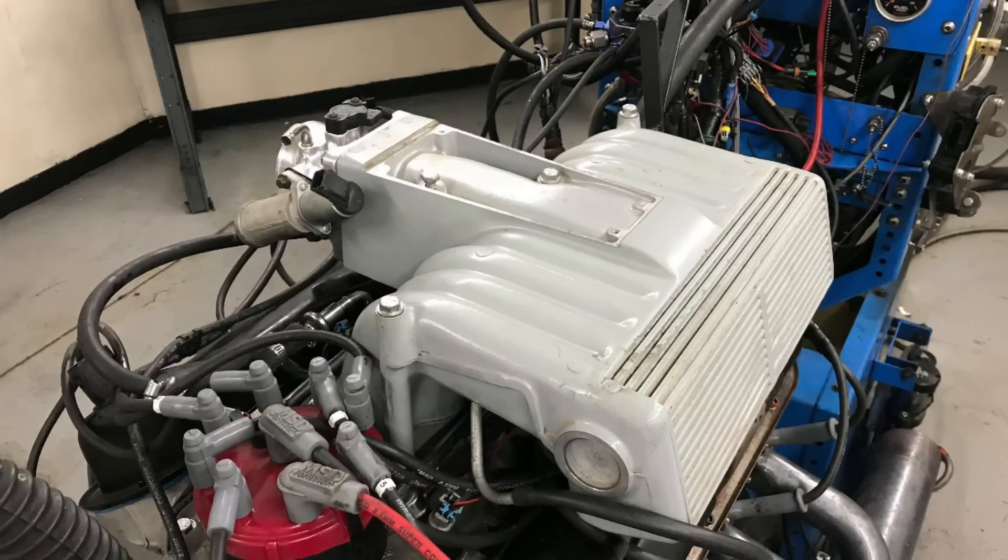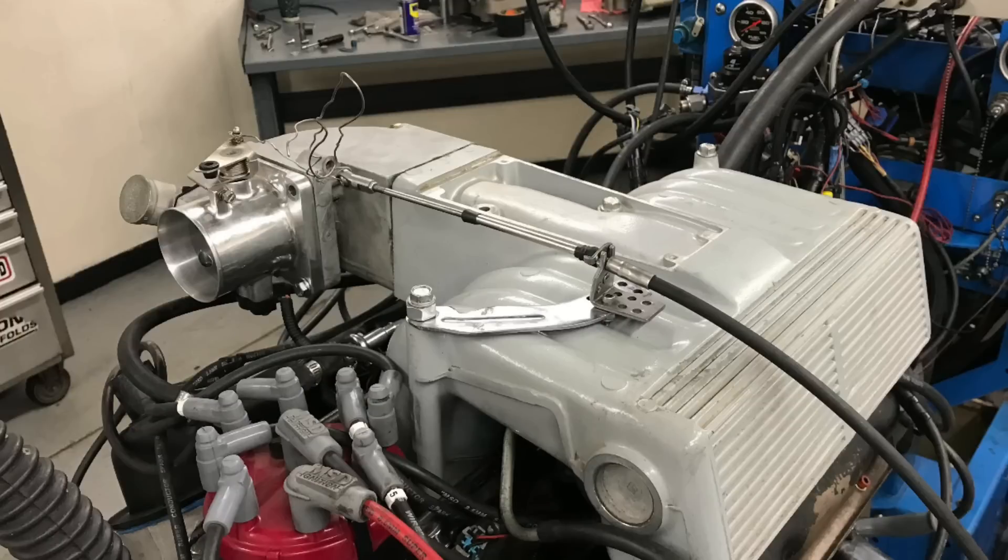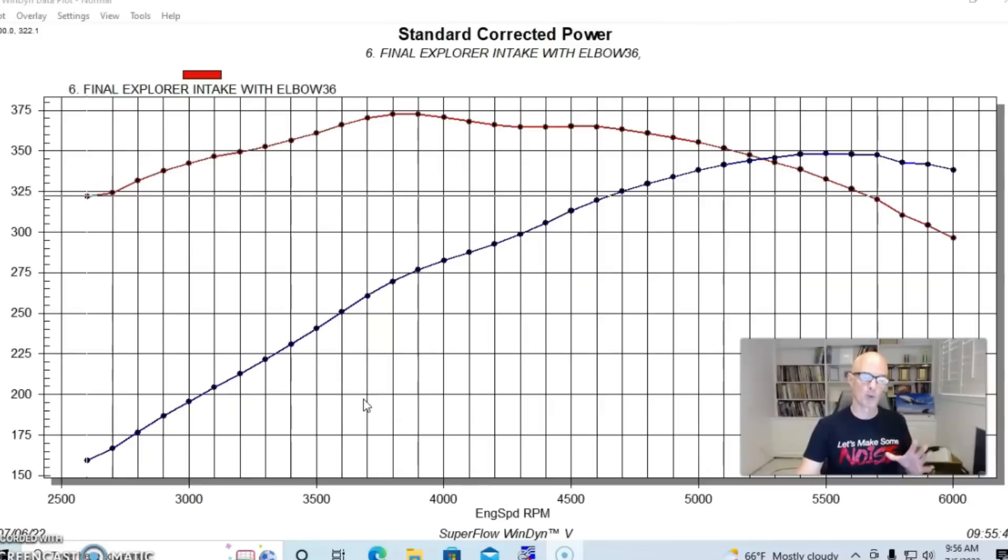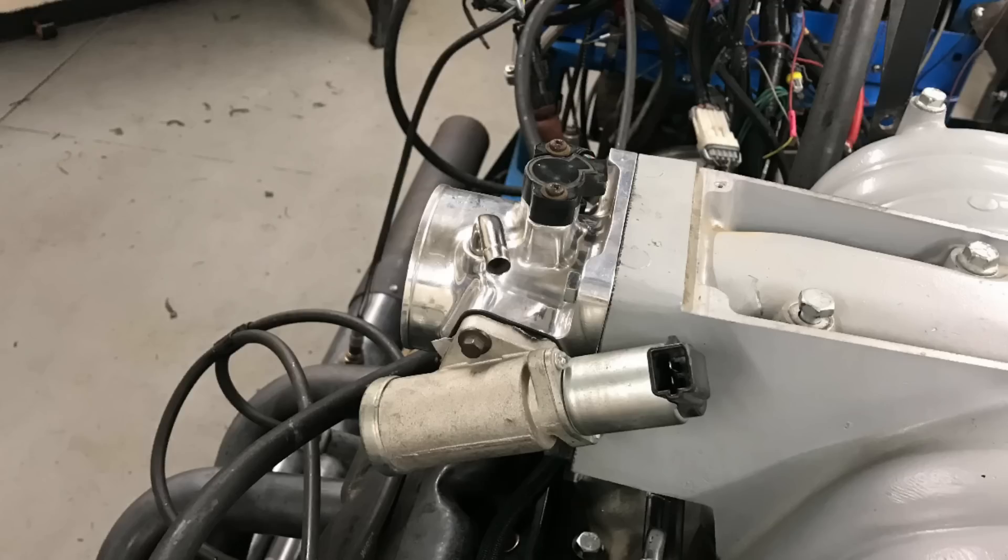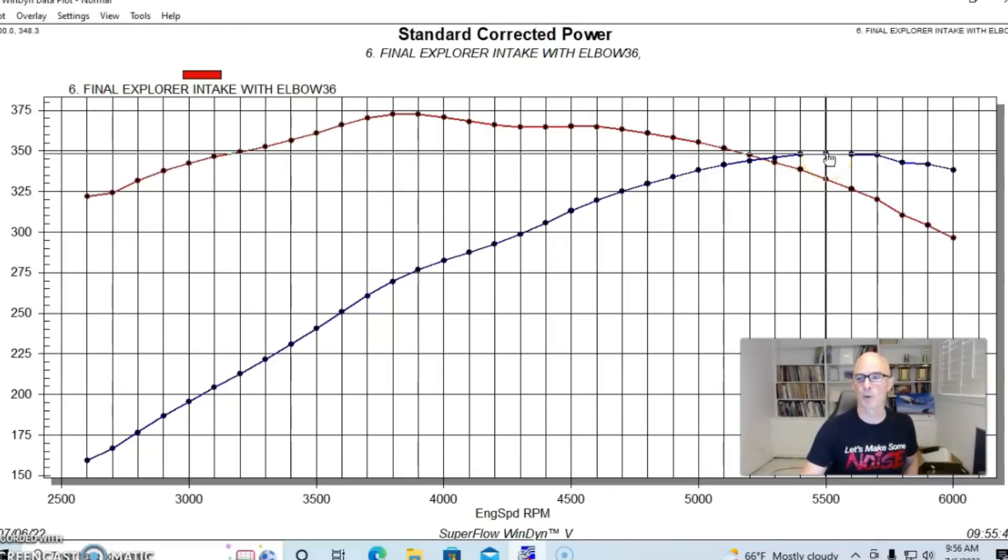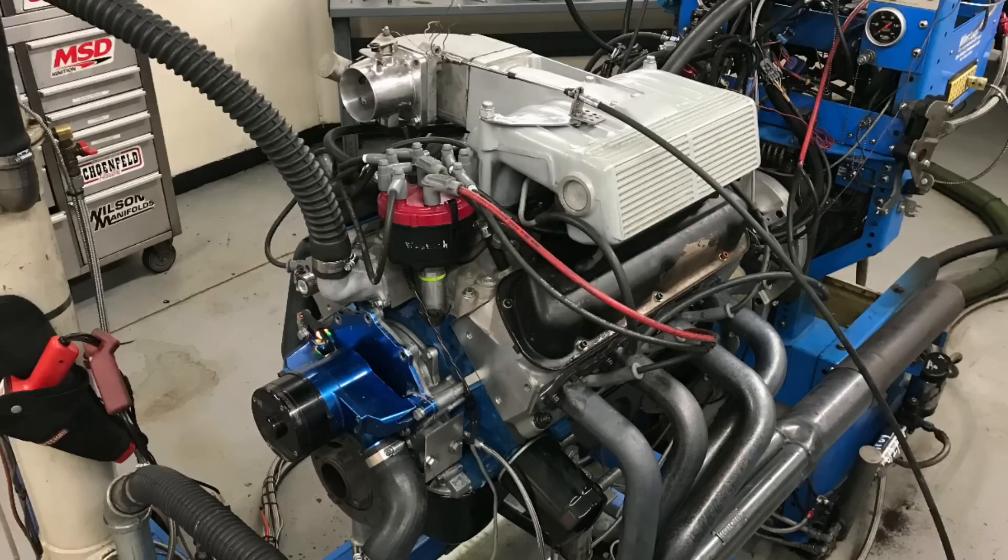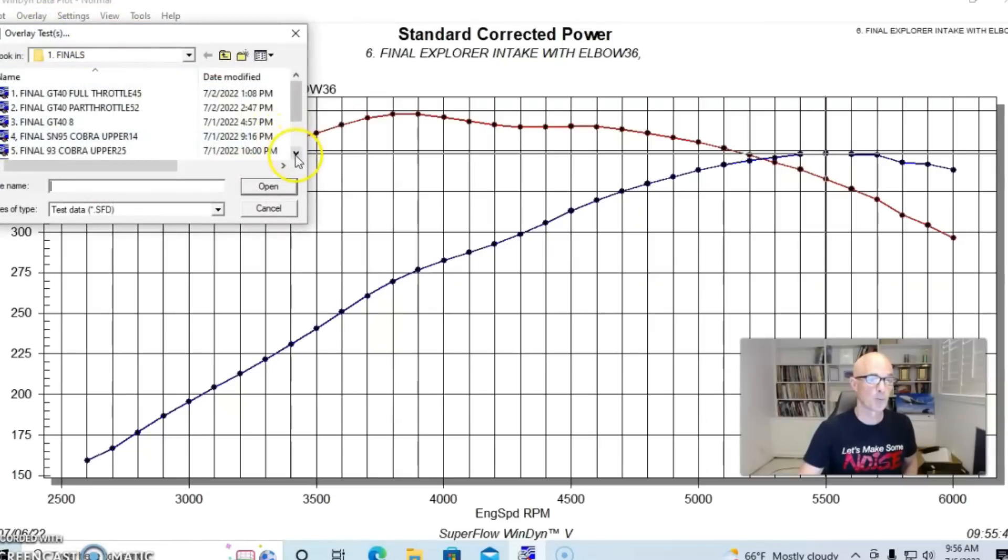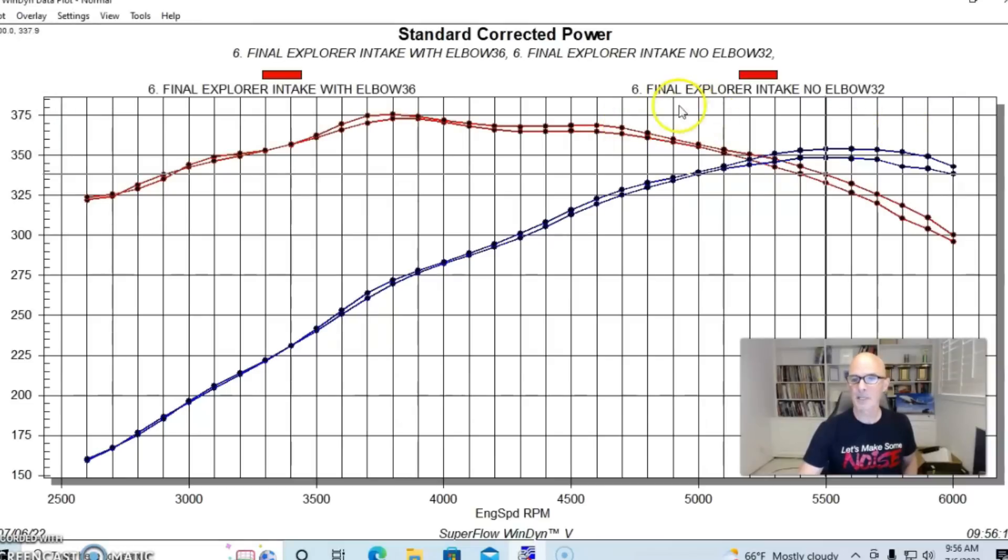So, we've taken a look at the Explorer intake with the factory 90-degree elbow. Let's take a look and see what happened when we removed that and just installed our throttle body right onto the intake manifold. So, we had a direct feed for that. This was our combination with the factory elbow, the Explorer intake with the elbow, 348 horsepower. And here's what happened when we removed this elbow.